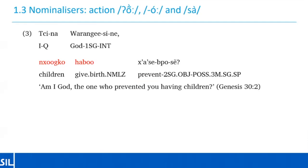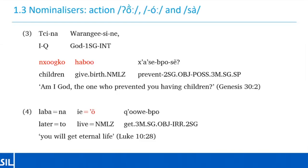Example three is from the translation of the book of Genesis written in the community orthography. 'China warangaisi na maoko habo a se posen' — am I God, the one who prevented you having children? Here 'maoko habo' meaning giving birth to children could perhaps be analyzed as a form of object incorporation. In contrast, when 'ong' or 'sa' are used to nominalize more than just a verb, it's common to see constituents other than objects in the nominalization. For example, 'labana ie ong roe po' — you will get eternal life — where 'labana ie' meaning to live eternally is expressed by an adverb and a verb, then nominalized with 'ong', functioning together as the object of the verb 'get'.